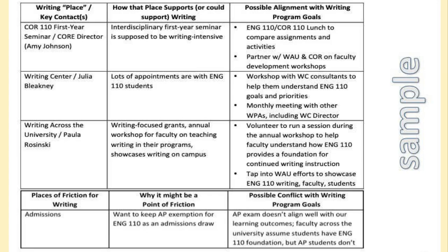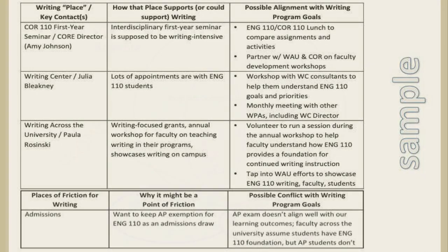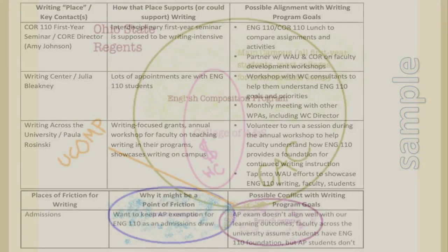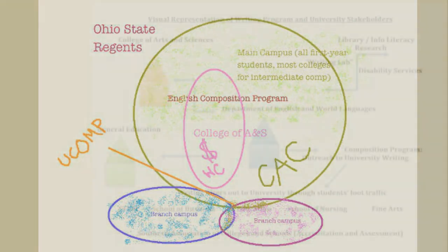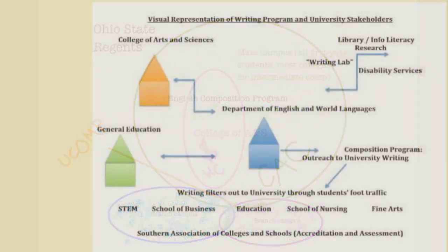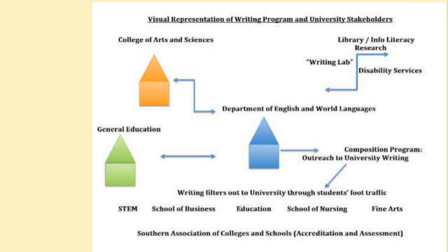Next, create a campus map or visualization of your campus and who and where stakeholders exist on your campus as related to the writing program. You will find examples that represent these types of writing program maps on this video.